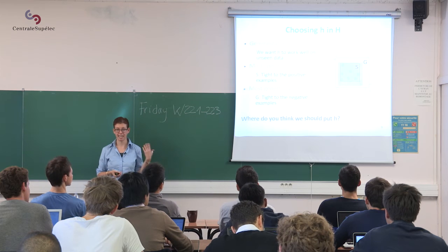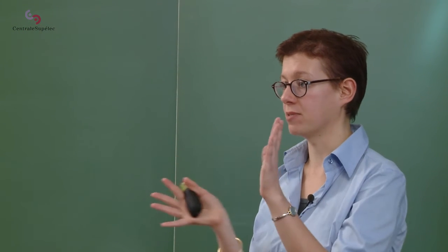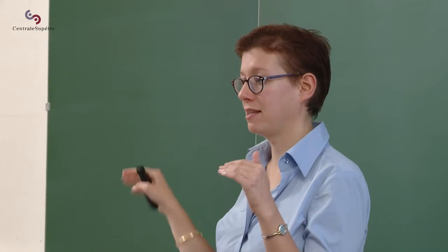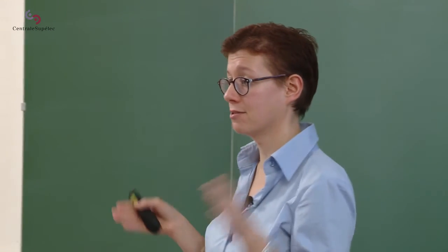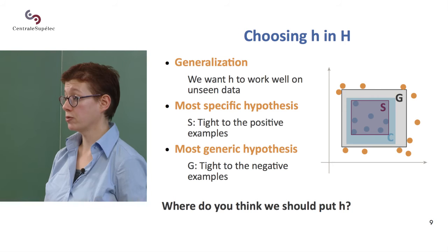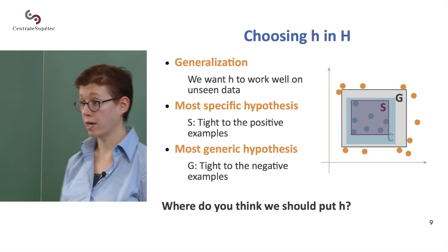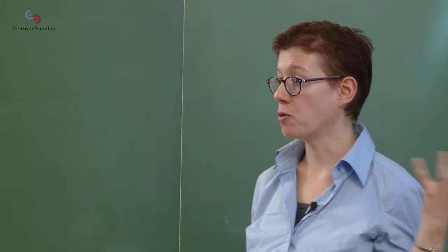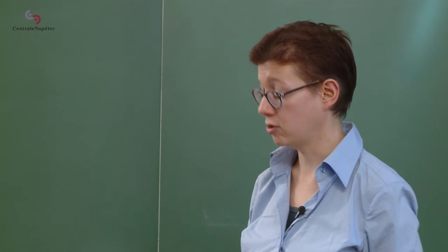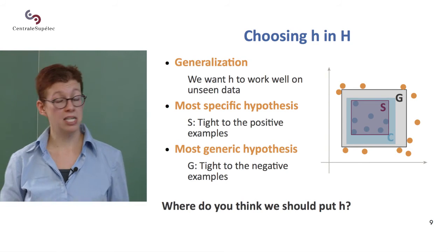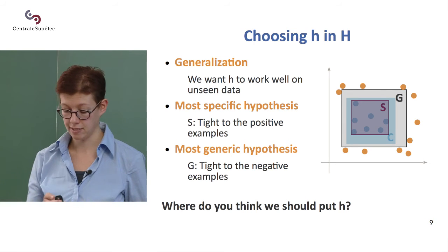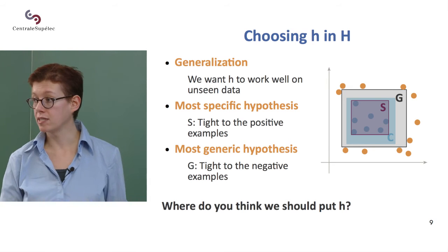We've defined a hypothesis space capital H, which is a set of rectangles aligned with the axes. The X dimension is the horizontal dimension between P1 and P2 (price), and the vertical dimension between E1 and E2 (power). We want to choose H in such a way that it works well on new data. You can draw many rectangles that work for the data shown, so the question is which one of those rectangles are we going to choose? We want H to work well on new data.